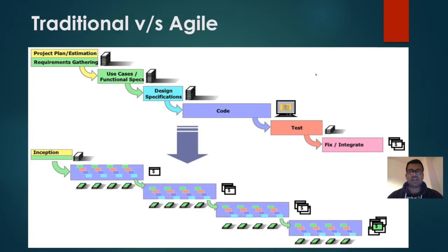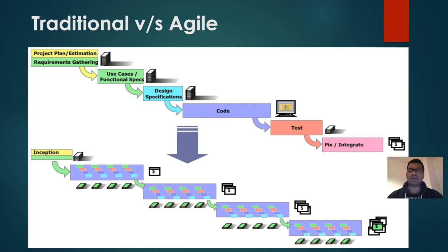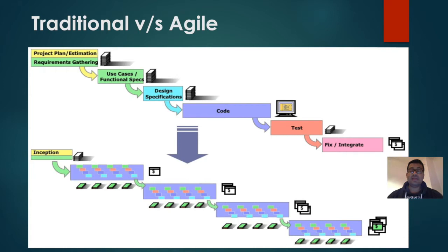In the traditional approach, one stage of software development takes place only when the previous step has completed. For example, project estimation and requirement gathering must be done before use cases or functional specs are prepared, then design takes place, then coding happens, then testing is performed, then all modules are integrated for regression, and finally it is released to production.